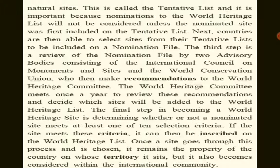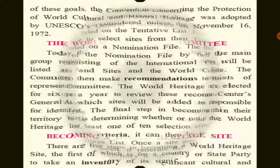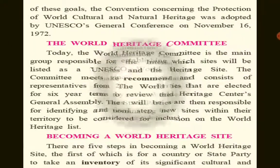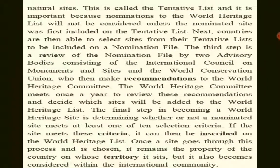People are looking for World Heritage sites, which can be natural sites or cultural sites. This is called a tentative list, which is a temporary list, and this is important for the World Heritage list because we cannot consider the nomination until the nominated site is included in the tentative list. Then, countries select their sites from the tentative list and include them in the nomination file.